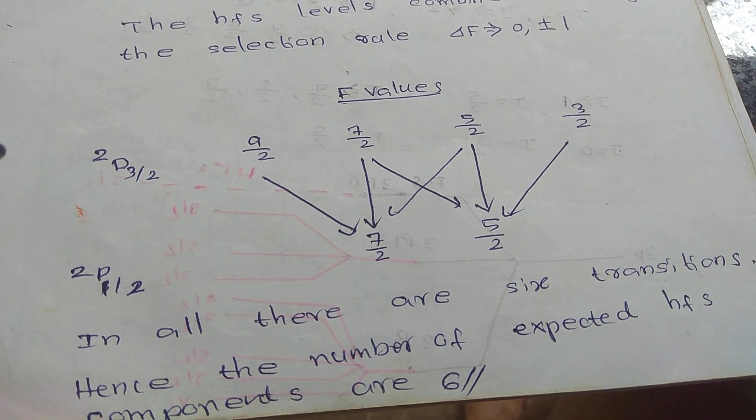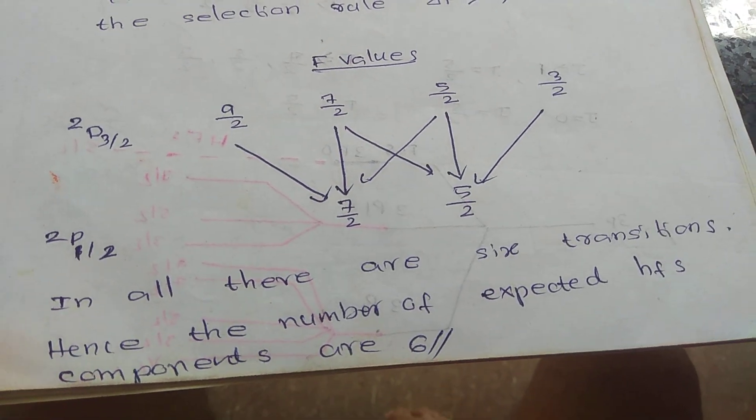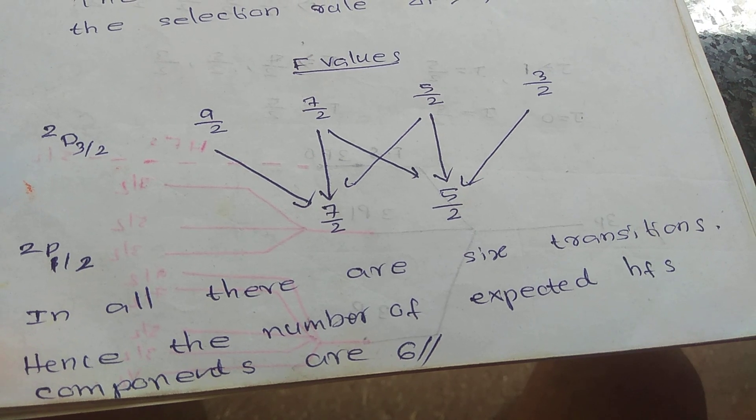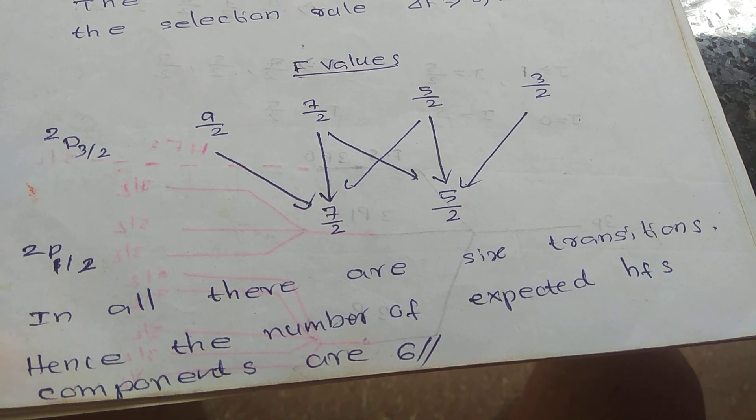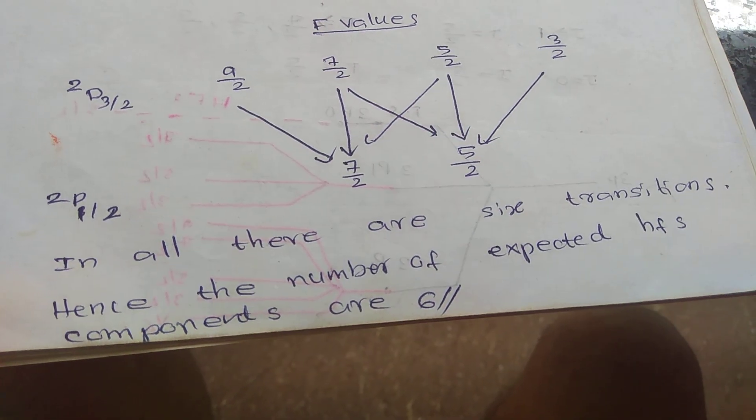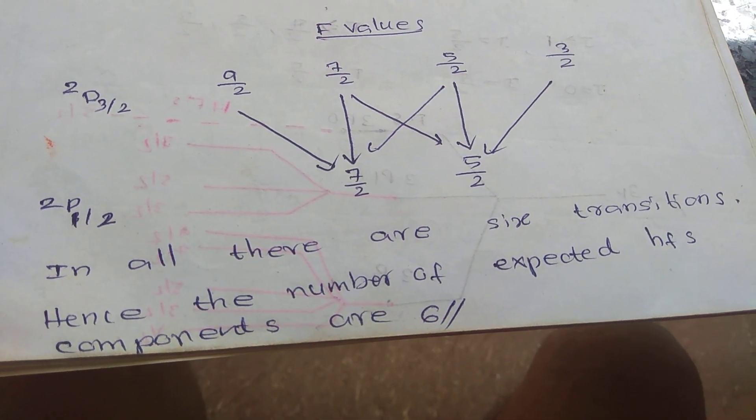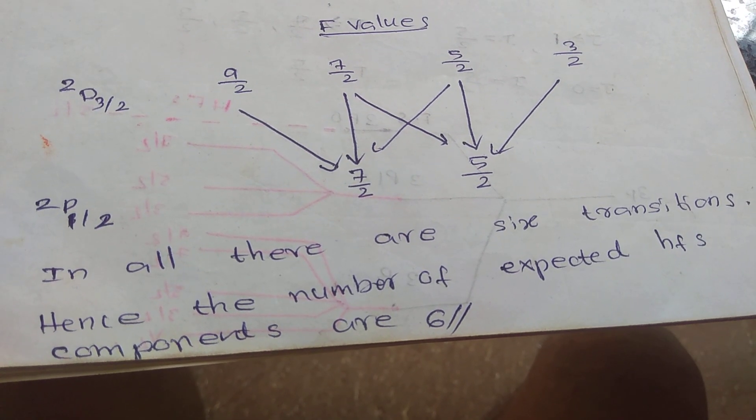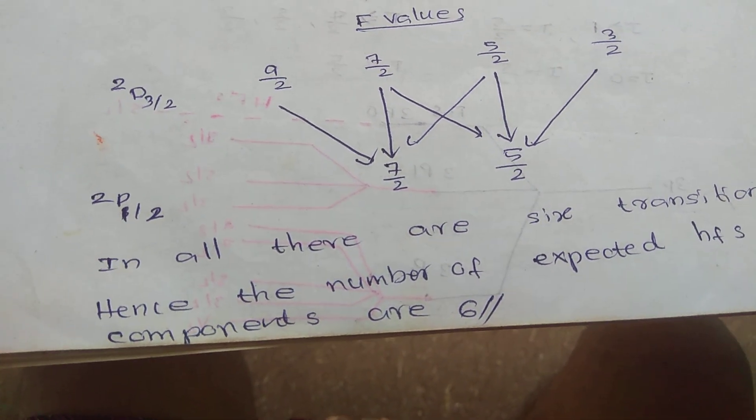First, 9/2 gives 7/2. Second, 7/2 gives 7/2, 5/2 gives 5/2, 3/2 gives 5/2. By cross multiplication, 7/2 gives 5/2 and 5/2 gives 7/2. So in all there are 6 transitions. Hence the number of expected hyperfine components is 6.